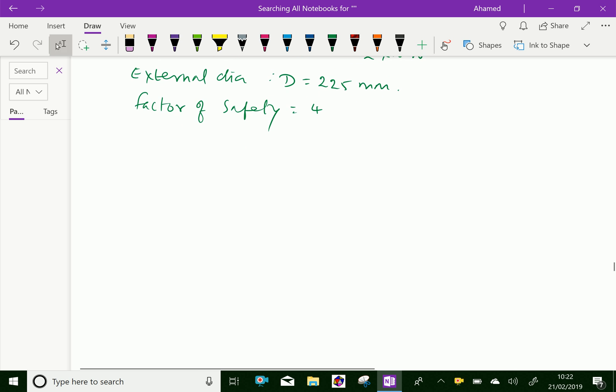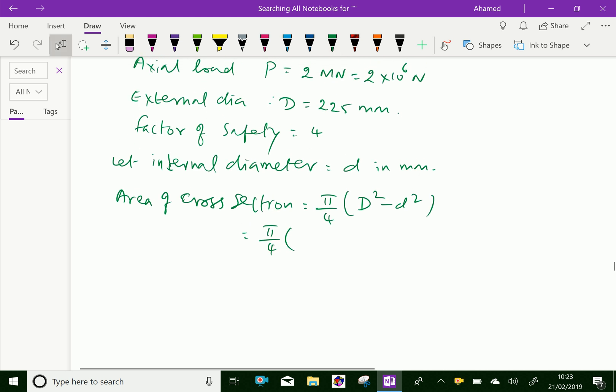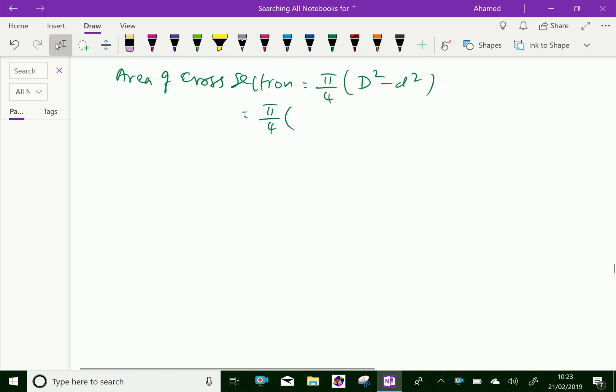Now let the internal diameter of column equal d in mm. Therefore, area of cross section of the column is equal to π by 4 times D squared minus d squared, which is equal to π by 4 times 225 squared minus d squared.